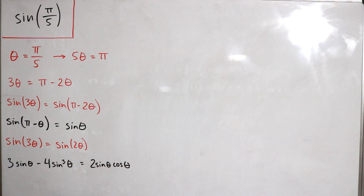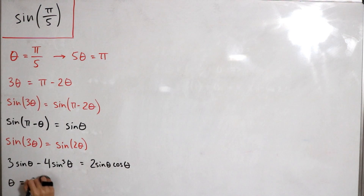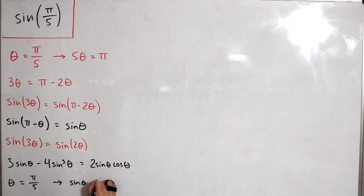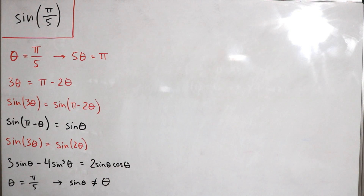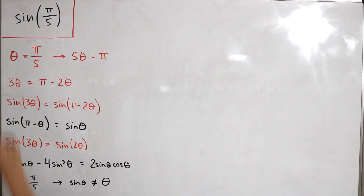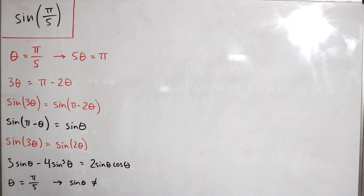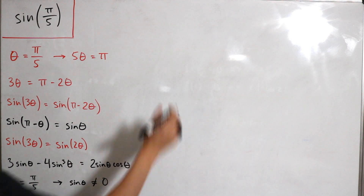It's worth noting that because θ equals π over five, sine θ is obviously not equal to zero — you want to pay attention to that because we can't divide by zero. Since we said θ equals π over five, we know sine θ won't be zero. So from here, we're going to divide both sides of the equation by sine θ.